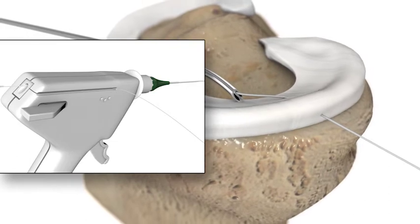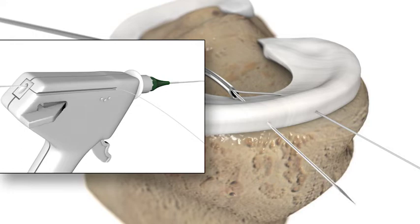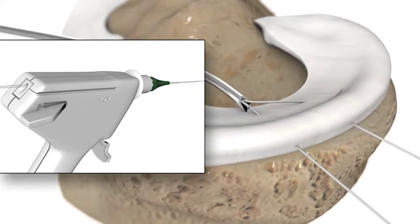Squeeze the main trigger to advance the needle into the second position on the meniscus. Once the needle exits the skin, hold down the thumb lever while your assistant pulls the needle out of the knee.